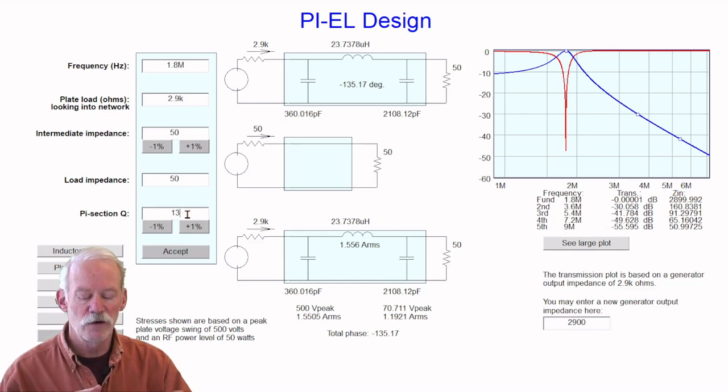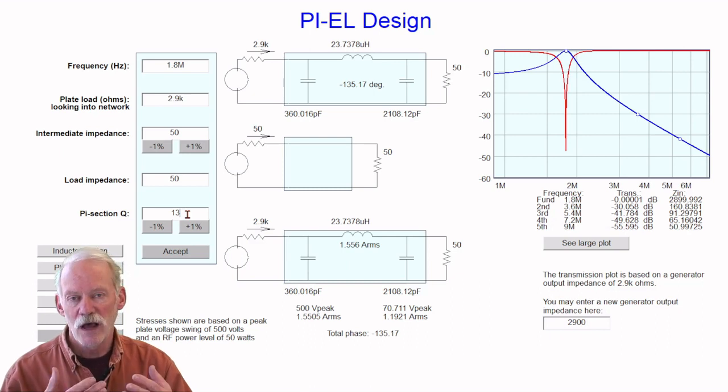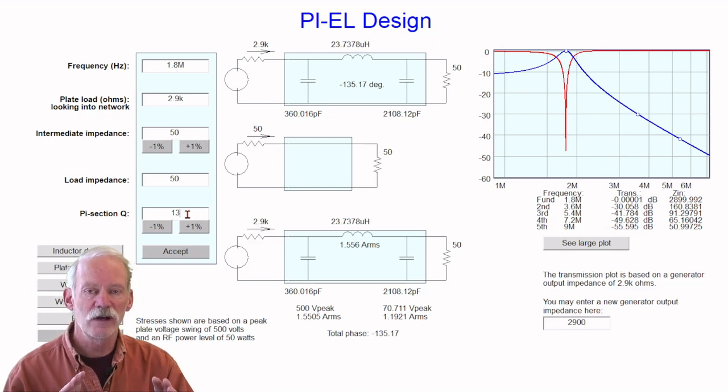I need to enter a value for the pi section Q, and this is an important number because, remember, this is a class C amplifier. And a class C amplifier is conducting less than 50% of the time, so there's pulses of RF coming into this circuit. But I need a clean sine wave coming out of it in order to eliminate harmonics. And the higher the Q, the more harmonic reduction you'll have in this network. A higher Q also will give you a little less efficiency in the network. But the rule of thumb for a class C RF amplifier is to have a pi section Q of between 12 and 15. I'm going to use 13 for this calculation.